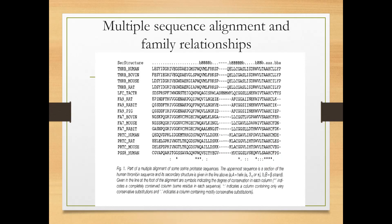If any residue is conserved throughout the alignment, it indicates either structural or functional significance, because there are only two reasons residues are conserved during evolution: to preserve function, and to maintain structural stability. The example shows the histidine residue conserved as one of the catalytic triad, and a cysteine residue conserved for structural significance — it forms a disulfide bond with another cysteine residue.